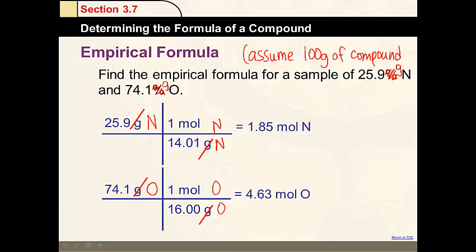Now, if these two numbers were whole numbers, we would be done and we would know the formula, but they're not. So we need to do the next step, which is divide them both by the smallest mole amount. Divide them both by 1.85. Of course, you're going to get 1 for nitrogen, and you get 2.5 for oxygen.